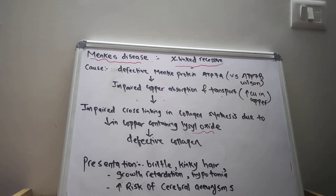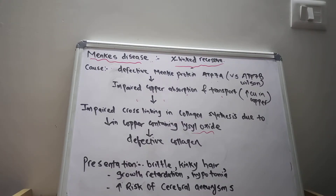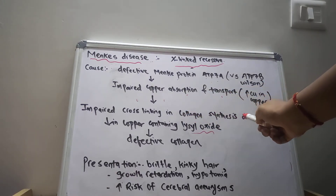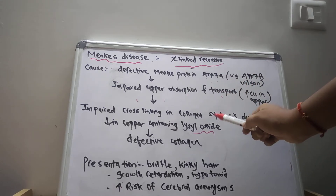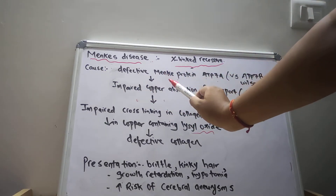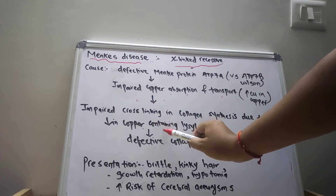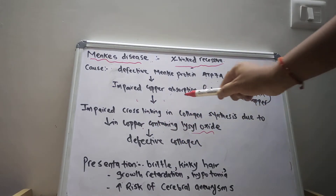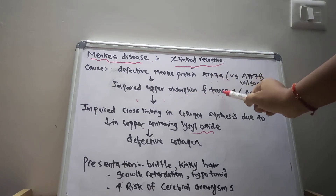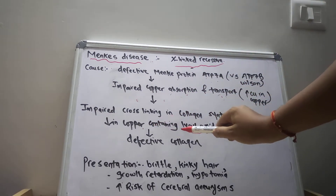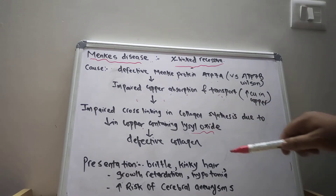As discussed in the previous lecture, this cross-linkage is the last step in collagen synthesis — please refer to that step if needed. There is impaired cross-linking in collagen synthesis due to a decrease in copper-containing lysyl oxidase. Because if there is no copper, there can be no copper-containing lysyl oxidase. If there is impairment in absorption and transportation of copper, then obviously there is a decrease in copper and lysyl oxidase, which ultimately leads to defective collagen.